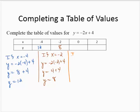If x is 0, y would equal negative 2 times 0 plus 4. y would equal 0 plus 4. y would equal 4.